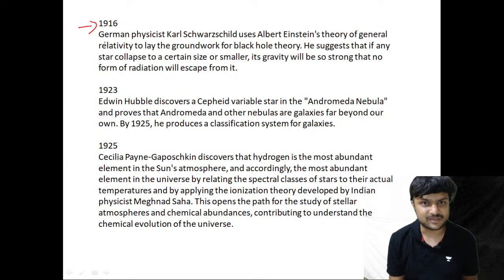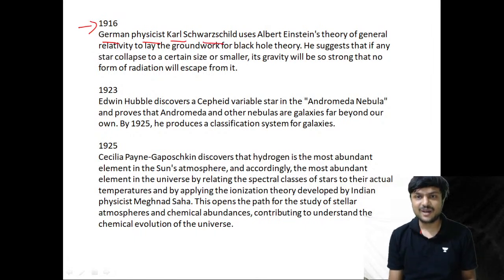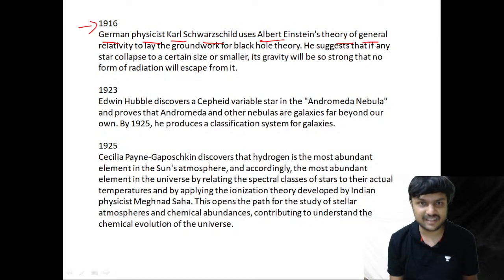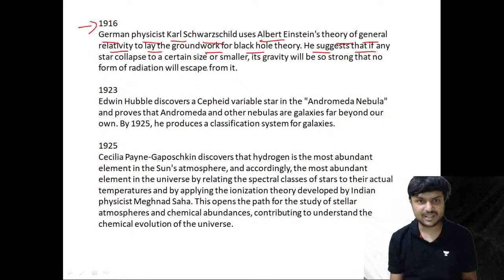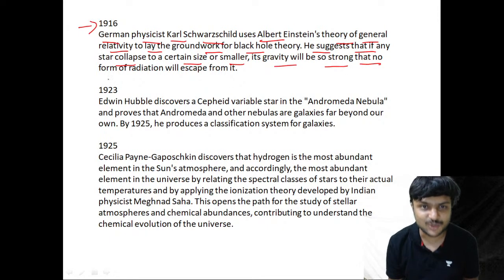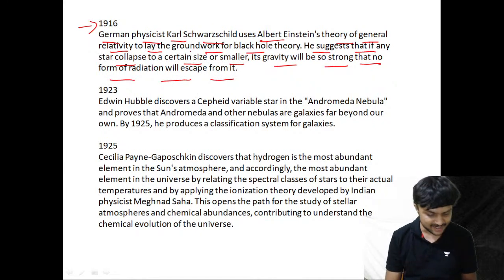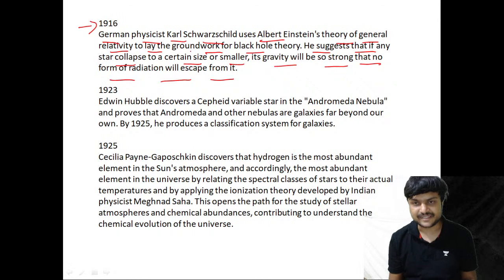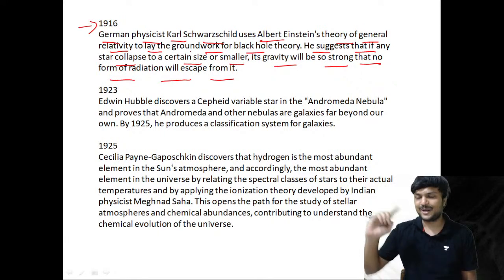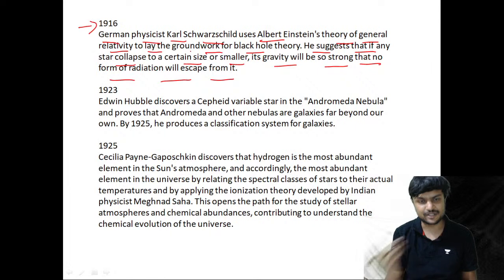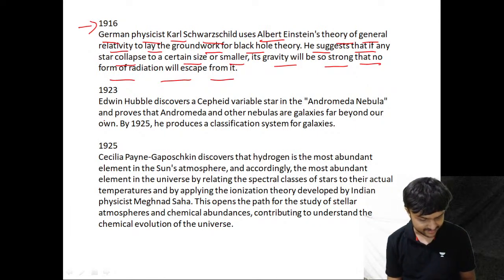In 1916, German physicist Karl Schwarzschild uses Albert Einstein's theory of general relativity to lay the groundwork for black hole theory. He suggests that if any star collapses to a certain size or smaller, its gravity will be so strong that no form of radiation can escape. The Schwarzschild radius is widely used in understanding the radius of a black hole, derived from general relativity.